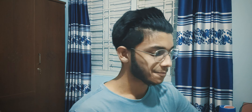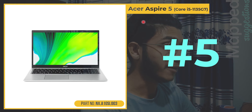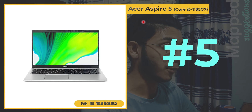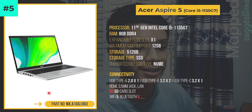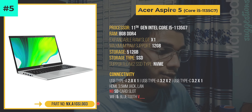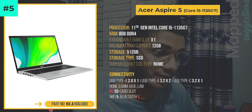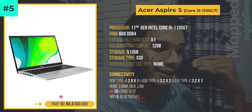So first, suggestion number five is the Acer Aspire 5 with its Intel Core i5 1135 G7 processor. If you know the history of this laptop, it has a long-standing place in the laptop industry, and each particular laptop has a unique identity number.